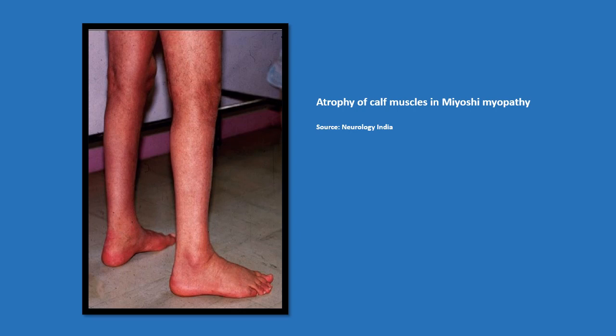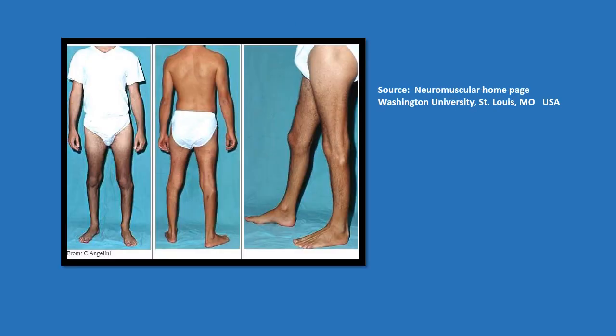This figure shows prominent atrophy of the posterior compartment muscles in the leg in a case of Miyoshi myopathy. This is another figure showing striking atrophy of the gastrocnemius and soleus muscles in a case of Miyoshi myopathy.